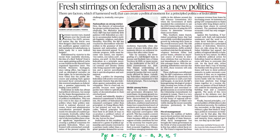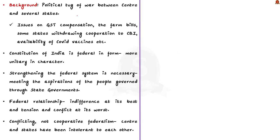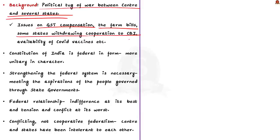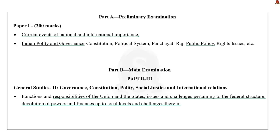Recently, we have seen the political tug of war between the center and several states. Issues such as GST compensation, the recent farm bills, and some states withdrawing cooperation from the CBI have put pressure on India's federalism. There were also issues regarding the availability of COVID vaccines and opposition to the proposed reforms in Lakshadweep as well. The most evident fight was between the center and the West Bengal government. In this context, let us discuss the editorial which speaks about creating a principled politics of federalism.